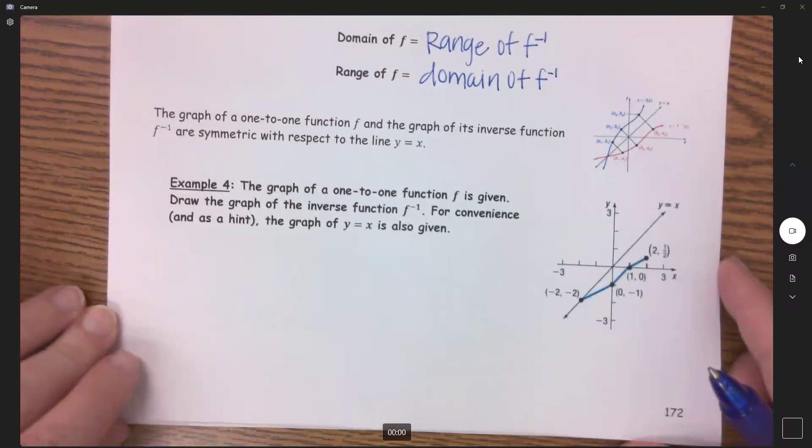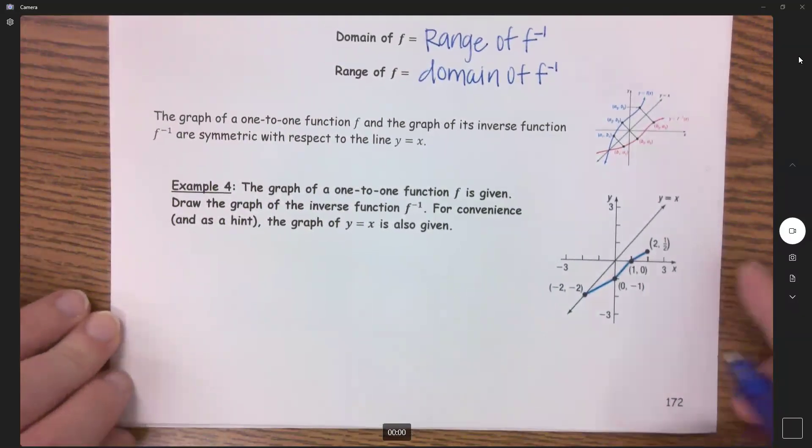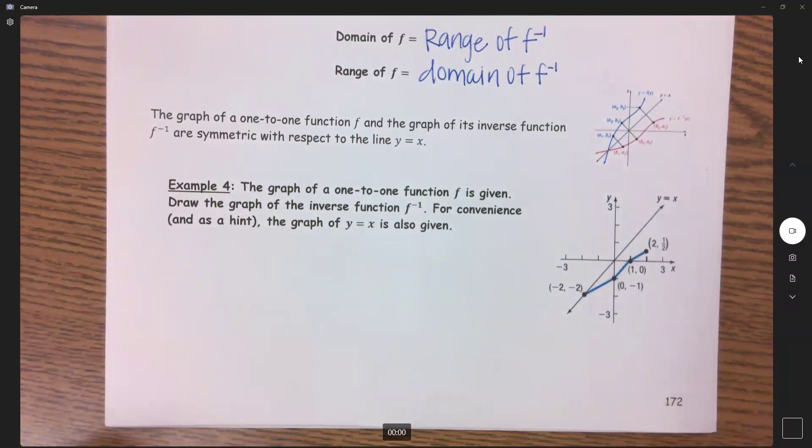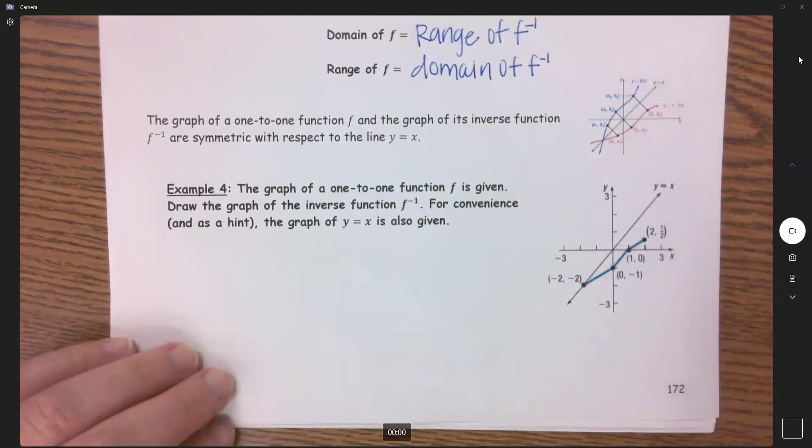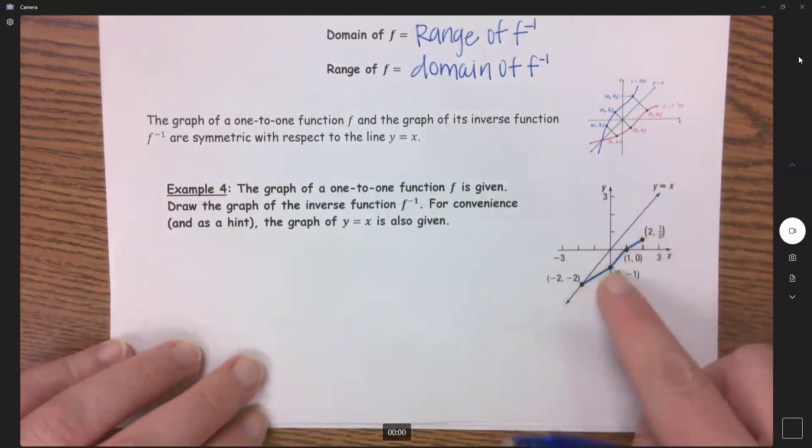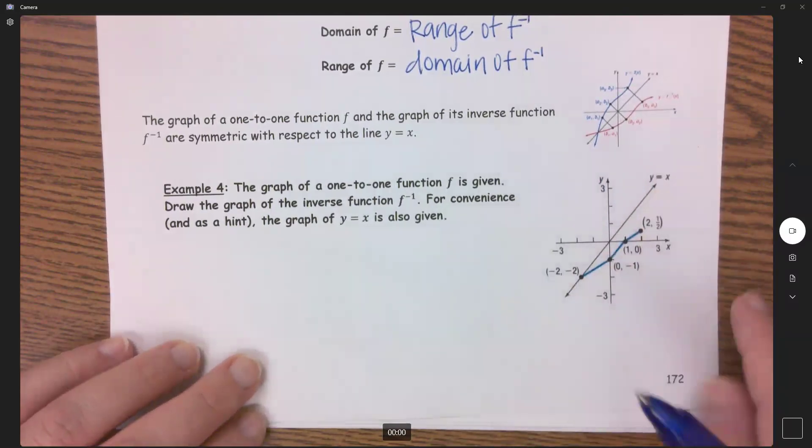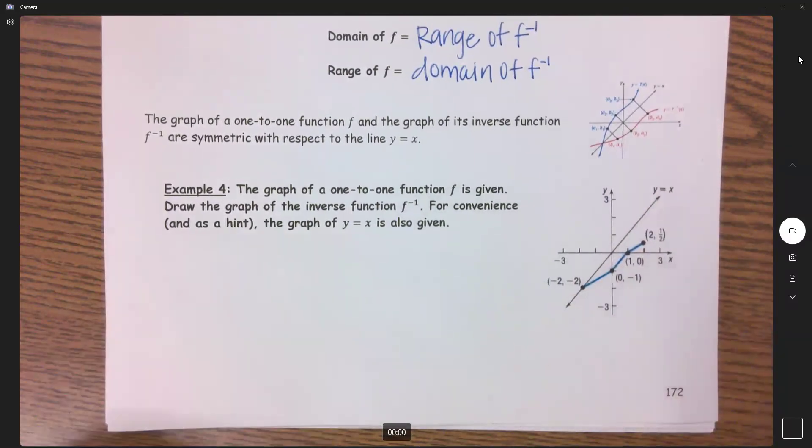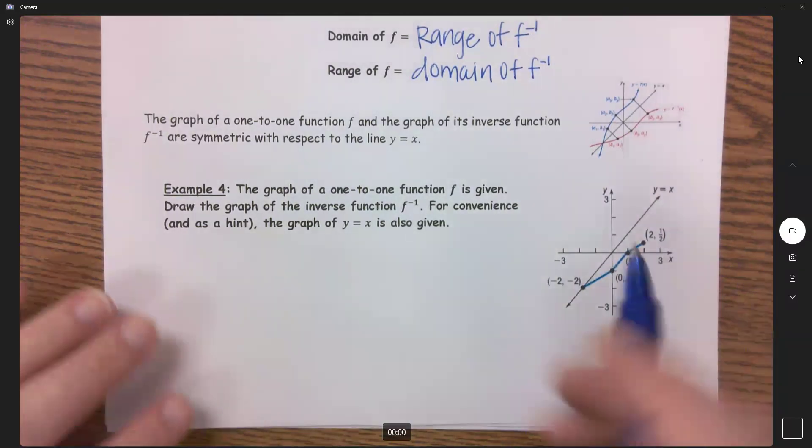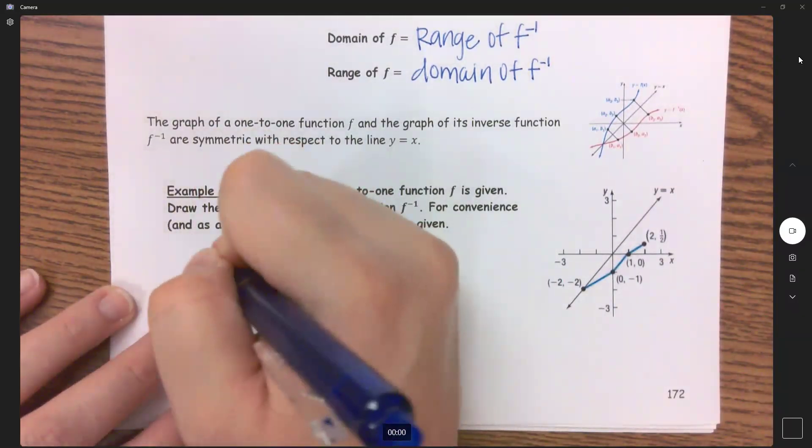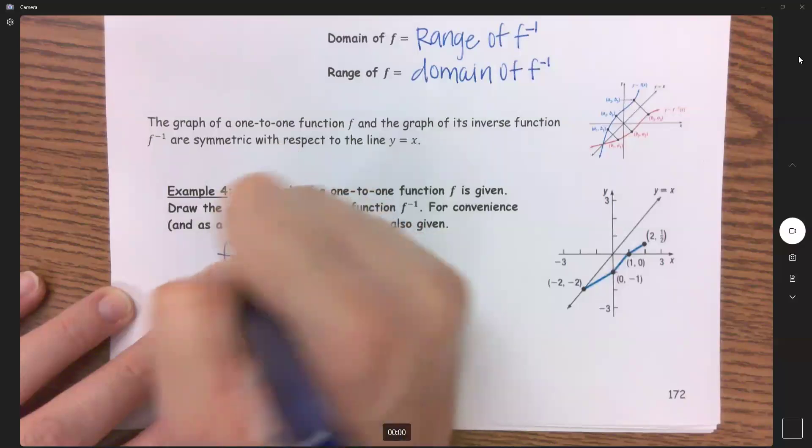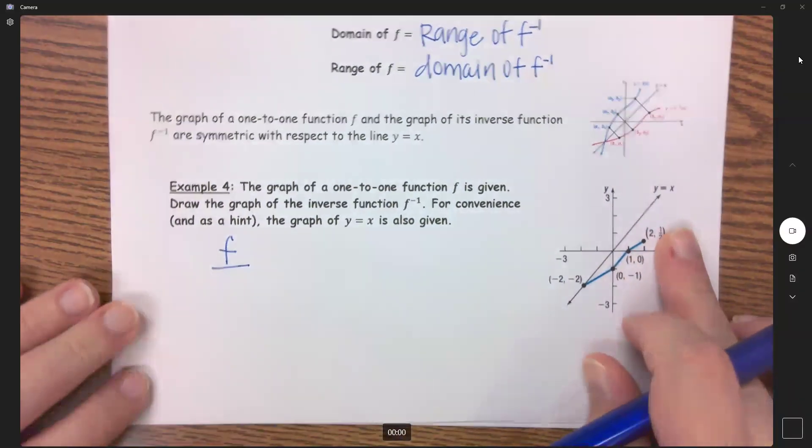So example four says the graph of a one-to-one function is given. Draw the inverse function and for your convenience and as a hint the graph of y equals x is also given. So we just have these four ordered pairs here and we see that line that we need to reflect it over. So first thing I'm going to do is just write all of my ordered pairs on my function.